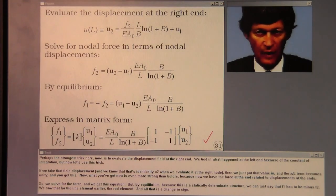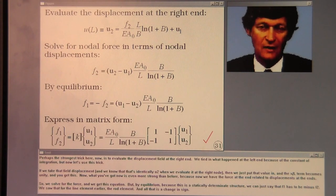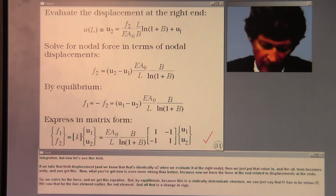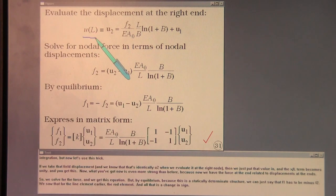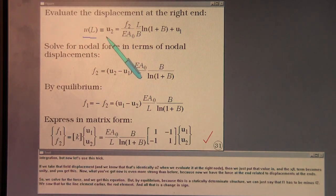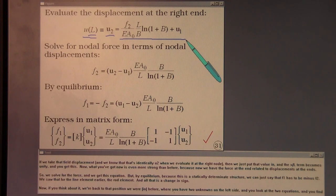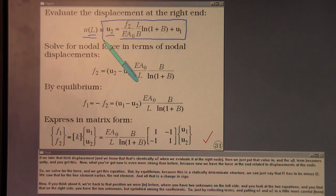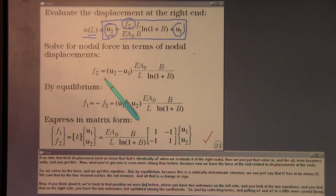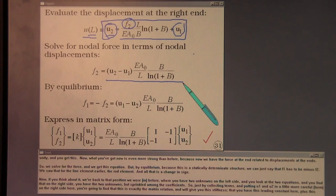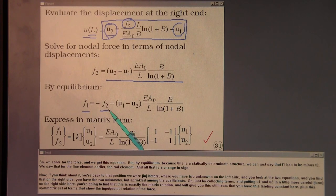Perhaps the strongest trick here now is to evaluate the displacement field at the right end. We tied in what happened at the left end because of a constant of integration, but now let's use this trick. If we take that field displacement and we know that that's identically u2 when we evaluate it at the right node, then we just put that value in and the x over l term becomes unity and you get this. Now, what you've got now is even more strong than before because now we have the force at the end related to the displacements at the ends. So we solve for the force and we get this equation. But by equilibrium, because this is a statically determinate structure, we can just say that f1 has to be minus f2. We saw that for the line element earlier, the rod element, and all that is is a change in sign.